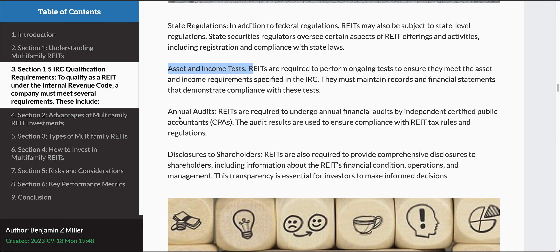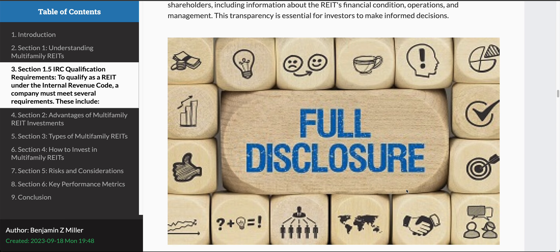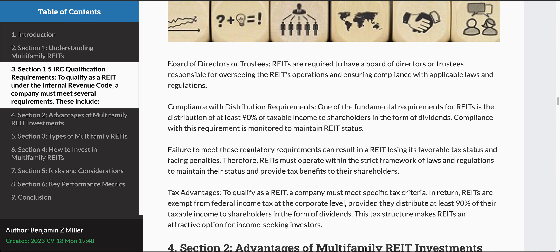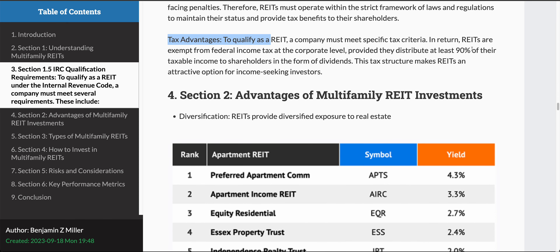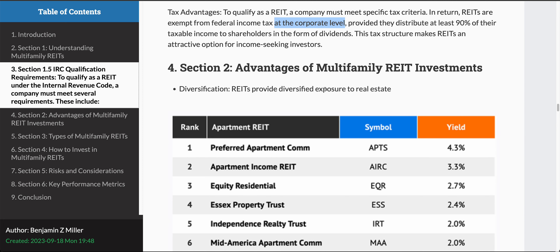REITs will have different asset and income tests, annual audits where an independent certified public accountant will do an audit, and full disclosure is a key aspect. There's a board of directors and trustees, and they have to maintain compliance with all of these requirements. REITs are exempt from federal income tax at the corporate level — underline that: at the corporate level. That doesn't mean that if you're receiving distributions from REITs you won't pay tax on your dividends — you definitely are going to be taxed. This tax structure makes REITs an attractive option for some income-seeking investors.